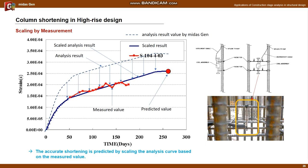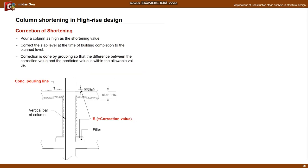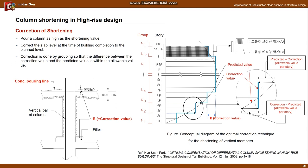The picture on the right shows the strain gauge installation. Next is how to do the correction. The column is poured as high as the shortening so that the slab level at construction completion matches the planned level. Correction is done by grouping so that the difference between the correction value and the predicted value is within the allowable value. In general, correction is performed in groups of two or three stories.